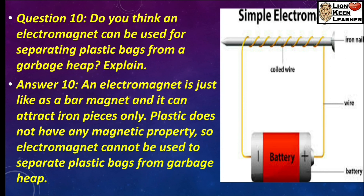Question number 10: Do you think an electromagnet can be used for separating plastic bags from a garbage heap? Explain. Answer: No, not possible, because plastic को electromagnet attract नहीं करती. An electromagnet is just like a bar magnet and it can attract iron pieces only. Plastic does not have any magnetic properties. Electromagnet cannot be used to separate plastic bags from a garbage heap. किसी भी electromagnet या magnet के द्वारा plastic को attract नहीं किया जा सकता.